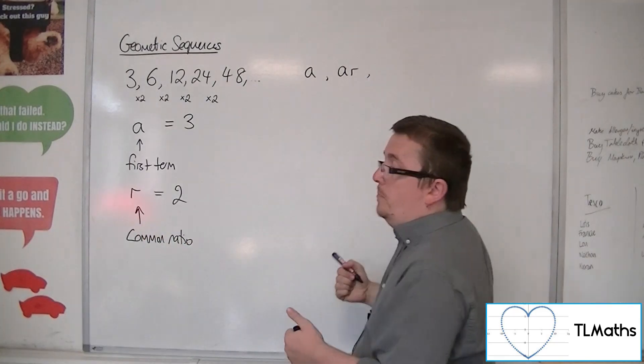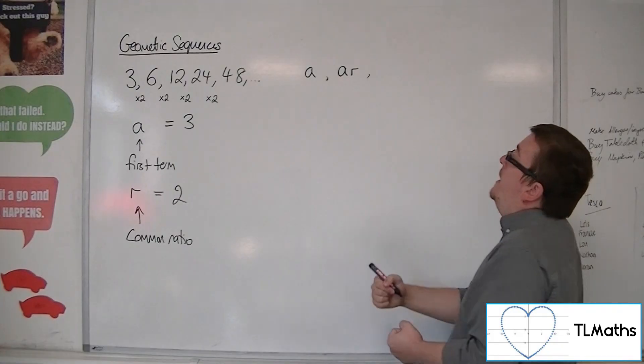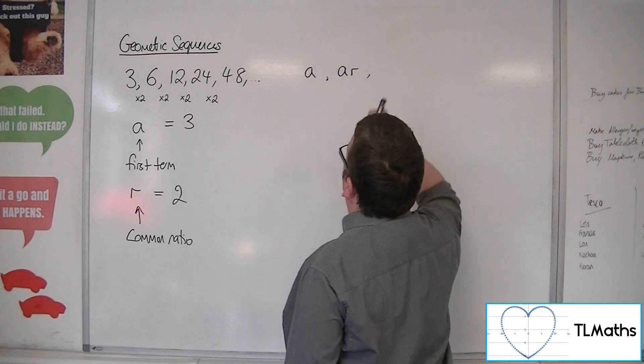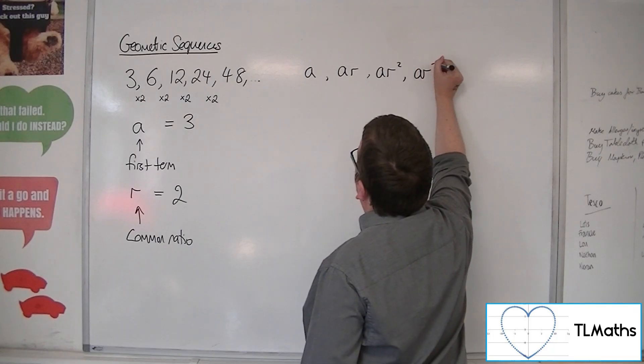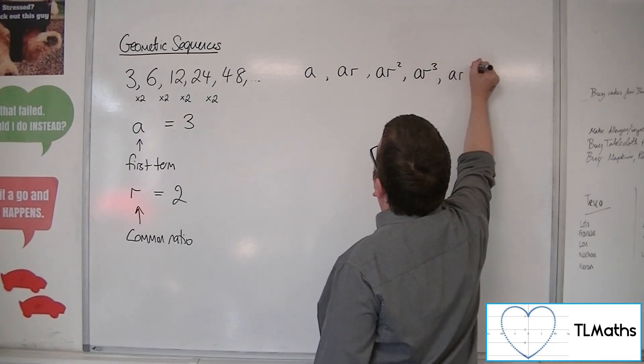The next term is me multiplying by r again. So it's a times r times r, so ar squared. And then you'd have ar cubed and ar to the 4.